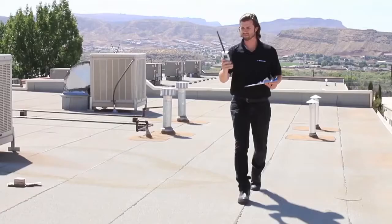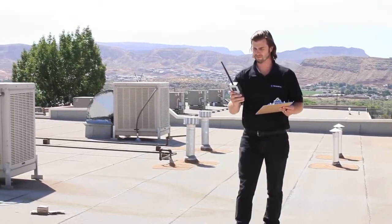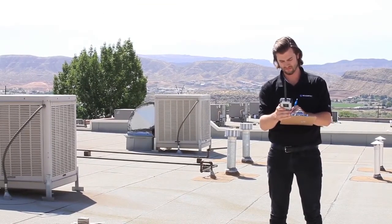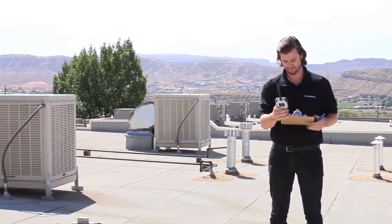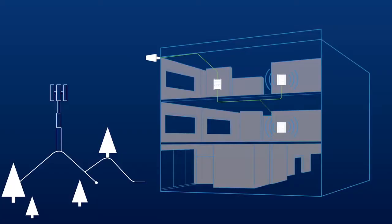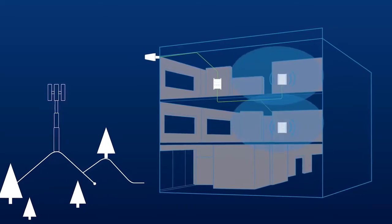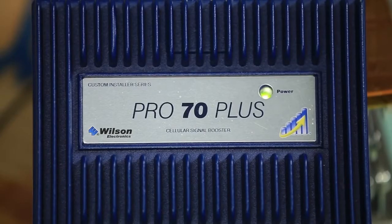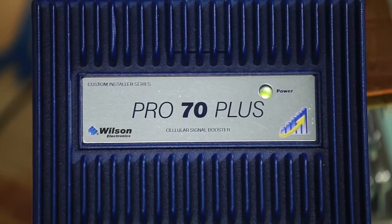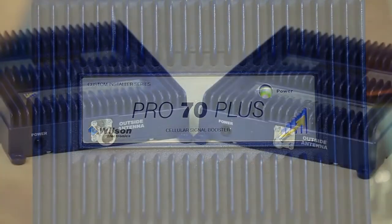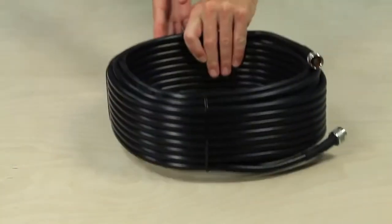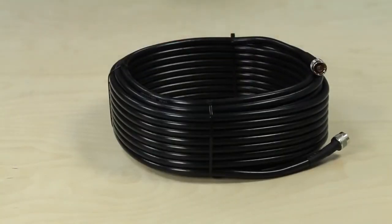It all starts with outside signal. Knowing the outside signal strength will help you determine a number of things: like is there enough signal to use a signal amplifier system, how much coverage can be expected from each amplifier, how many inside antennas the amplifier can support, how many total amplifiers will be needed, and what your max cable lengths can be.